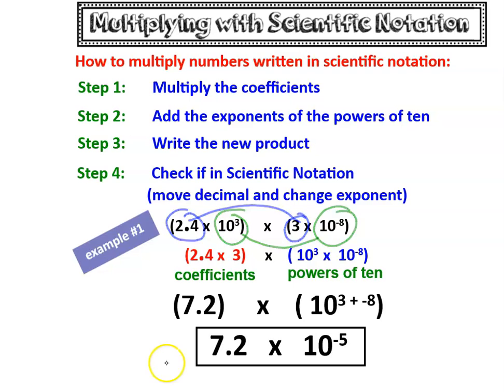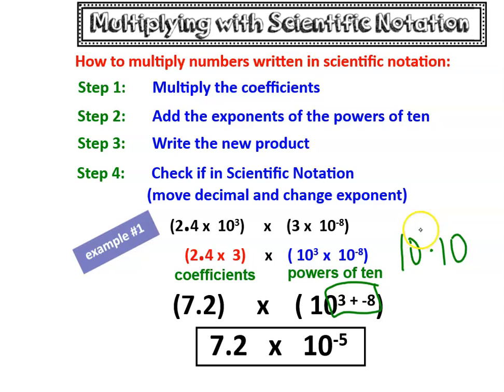You'll notice that there is actually some multiplying that happens. 2.4 times 3 is 7.2. But when you multiply like bases, they don't actually change. 10 to the 3rd times 10 to the negative 8th still stays a base of 10. But notice what I do with the powers. Because I'm multiplying like bases, these two powers get added together.